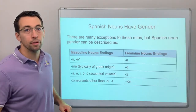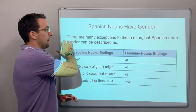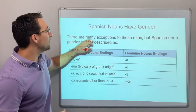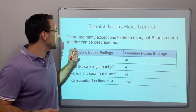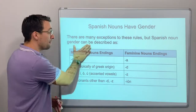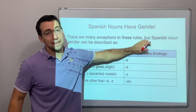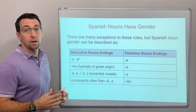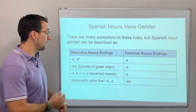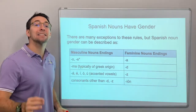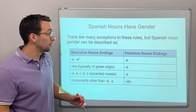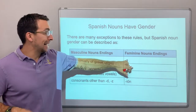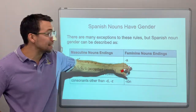There are always exceptions to the rules, especially with grammar. But Spanish noun gender can generally be described like this: if a noun ends in -o, it's going to be masculine for the most part; if it ends in -a, it's going to be feminine for the most part. So 'camisa' ending in -a is a feminine noun.